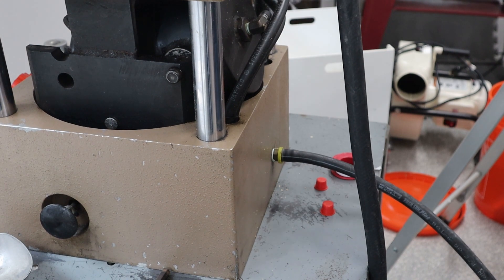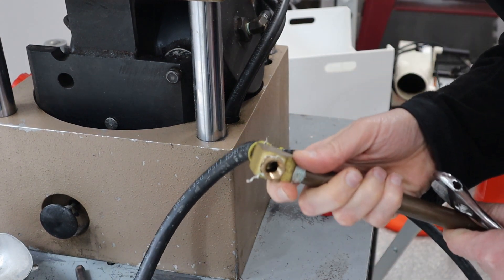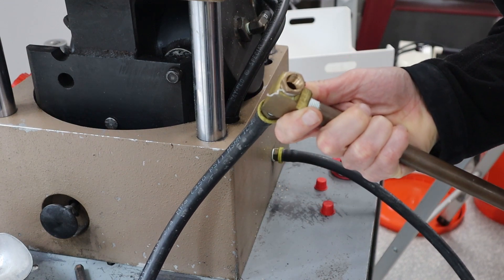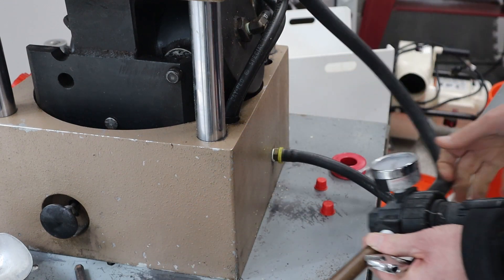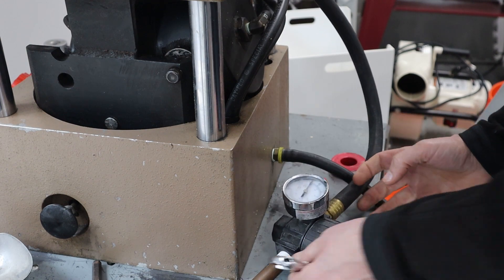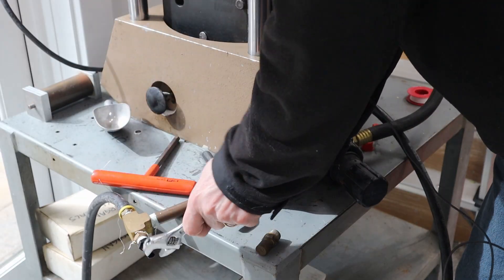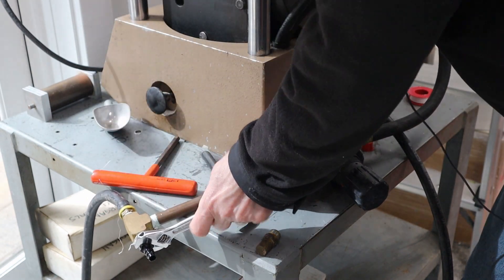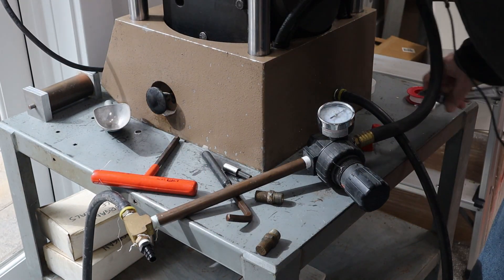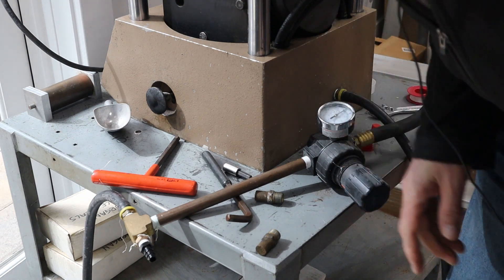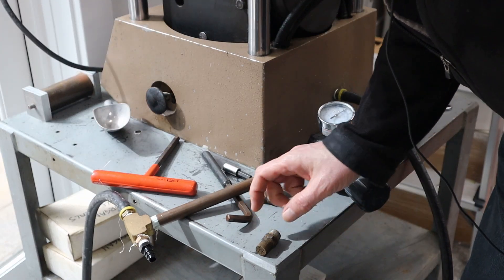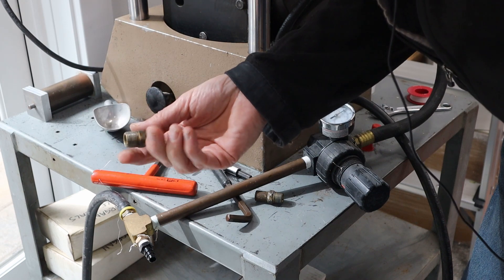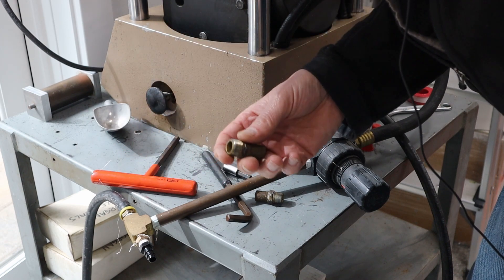That's hooked up. I need to put something in here. It looks like it's quarter NPT, so I'll get that out and put that in. That feels like that's in there pretty well. So now I'll put the mufflers on the top. I don't think I need a thread sealer on this, so I'm just going to screw them in.